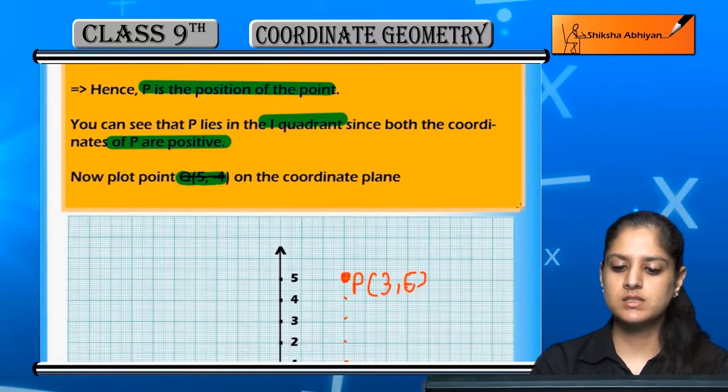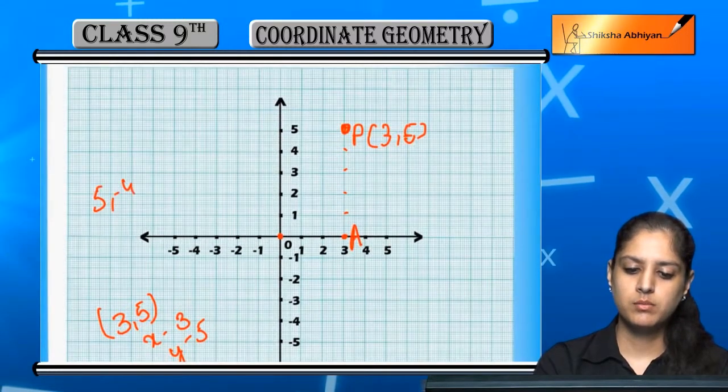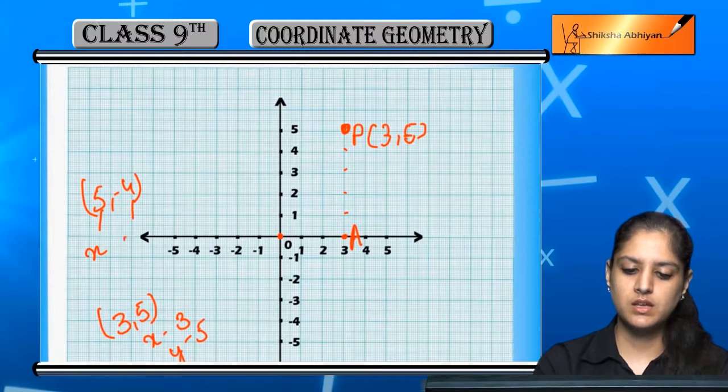If we plot another point, 5, minus 4. This is x, this is y. Same procedure.